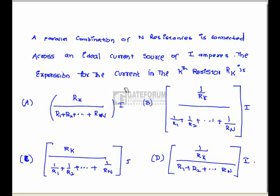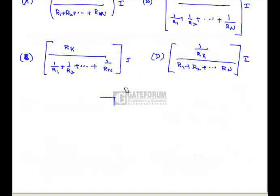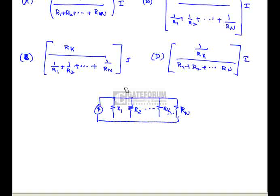A parallel combination of N resistors are connected across the ideal current source of I amperes. The expression for the current in the kth resistor is. See we can draw a diagram like this in order to represent this position that is I amperes. This is K R R N. This is I amperes. V K this is I K. I K equals to V K by R K.